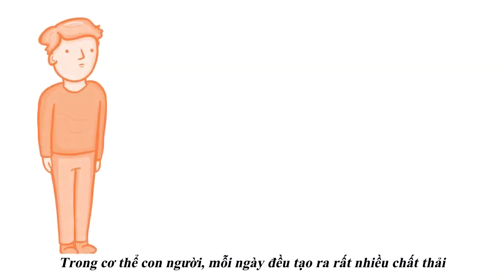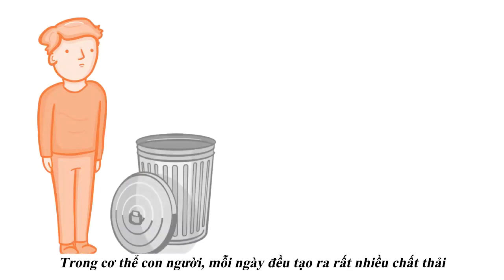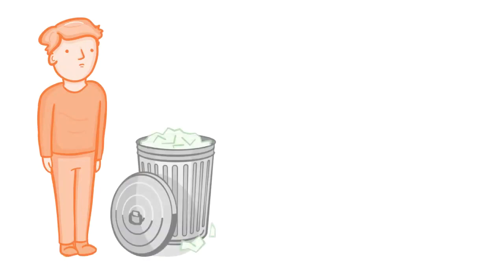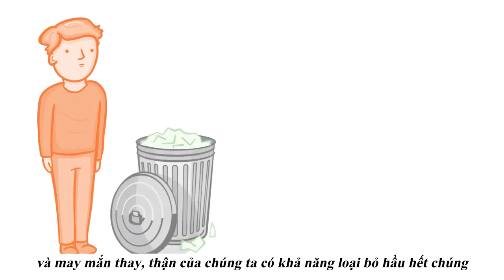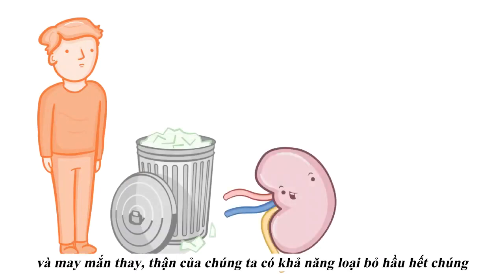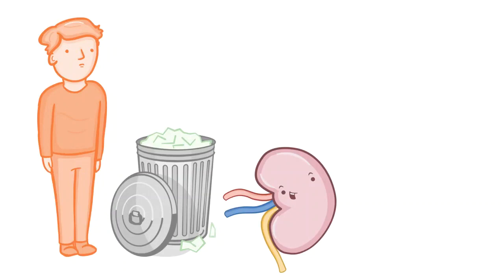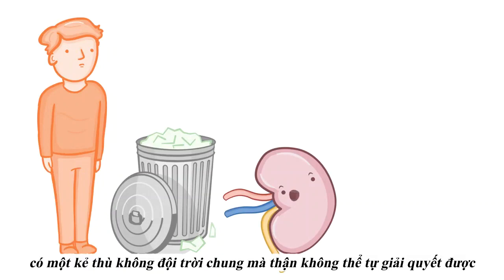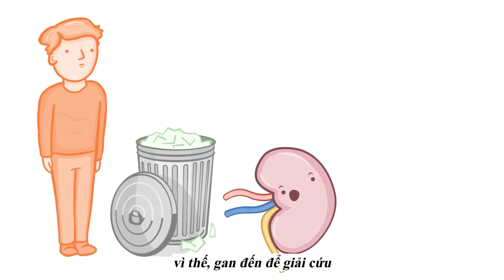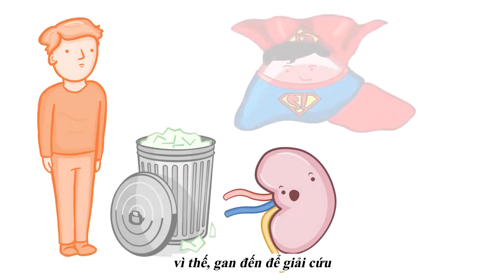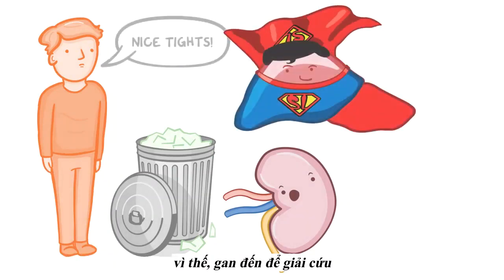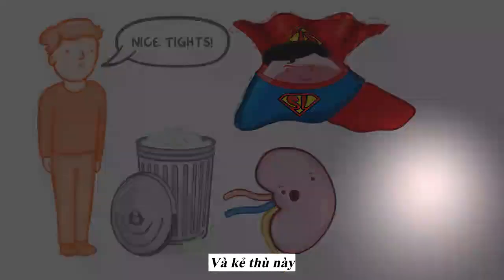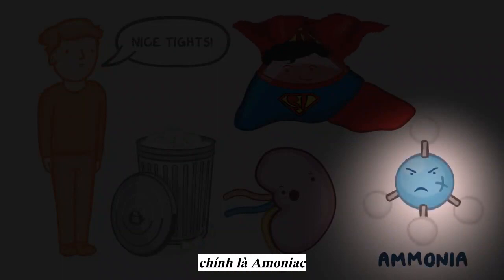The human body generates a lot of waste products, and fortunately our kidneys are capable of getting rid of most of them. However, there is one arch nemesis that the kidney can't deal with on its own, so the liver comes to the rescue, and that villain is ammonia.